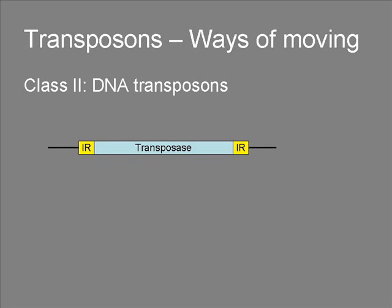We are now coming to the second class of transposable elements: the DNA transposons. They are quite simple elements. They do not produce an RNA copy of themselves; instead, they get cut out and themselves become inserted somewhere else in the genome. They are about 1 to 10 kilobases long, encode only one protein, and have inverted repeats at the ends. The protein they encode is called transposase and is necessary for their transposition — it is a multifunctional protein that recognizes specific sequences, can cut out the transposon, and insert it somewhere else.